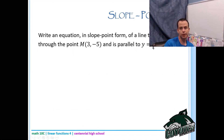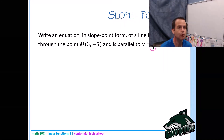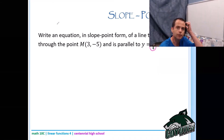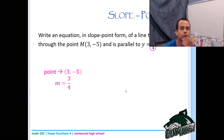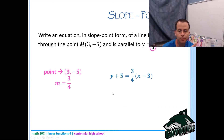Write an equation in slope point form for a line that passes through 3 comma negative 5 and is parallel to the line with slope three over four. Parallel means the slope is the same, so slope is three over four and the point is 3 comma negative 5. Plugging into y minus y1 equals m times x minus x1 gives the answer in slope point form. That's the complete answer since the question only asks for slope point form.